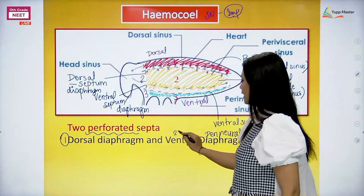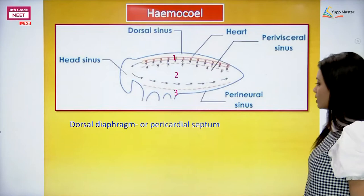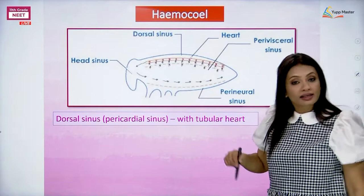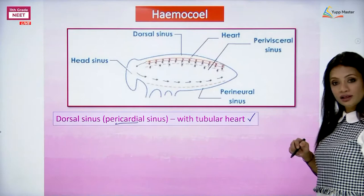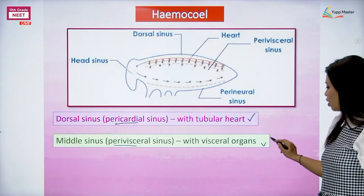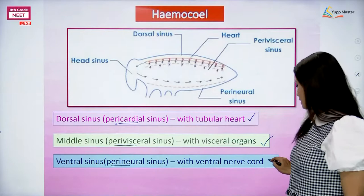We may call them the pericardial sinus, the perivisceral sinus, and the perineural sinus based upon the organs inside. There are two perforated septa - one called the dorsal diaphragm and second called the ventral diaphragm. That sums up all that you need to know about the hemocoel of the cockroach.